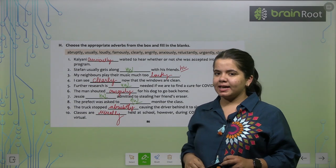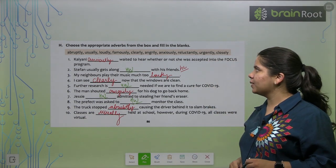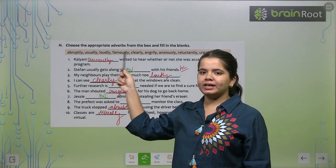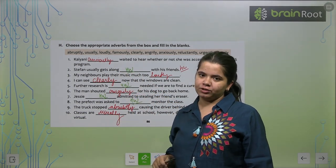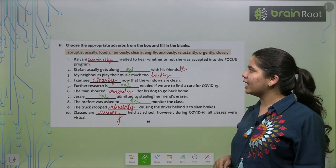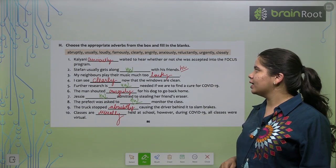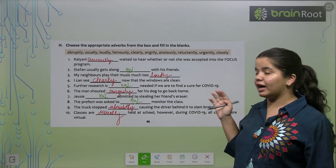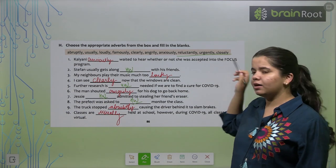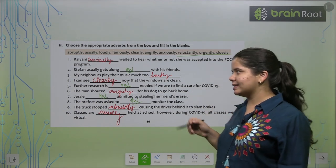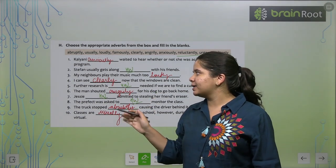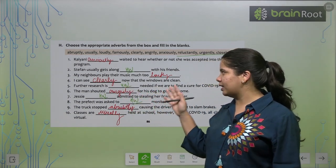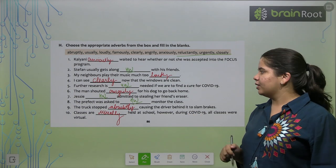Now we have exercise H. Choose the appropriate adverbs from the box and fill in the blanks. So we have some adverbs here and we have to look at them and fill on here. First, Kalyani anxiously waited to hear. Second one is your homework. Stephen usually gets along with his friends. So you have to find out the word from here and fill. Next, my neighbors play their music. I can see clearly now that the windows are clean. Fifth one, homework.